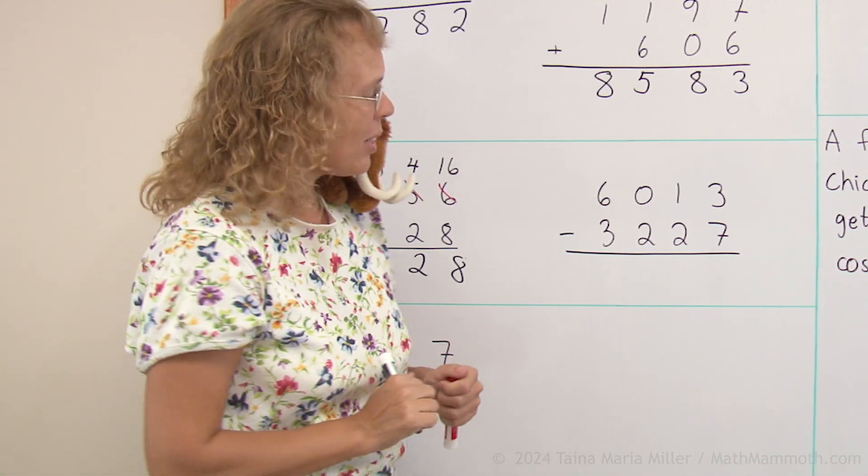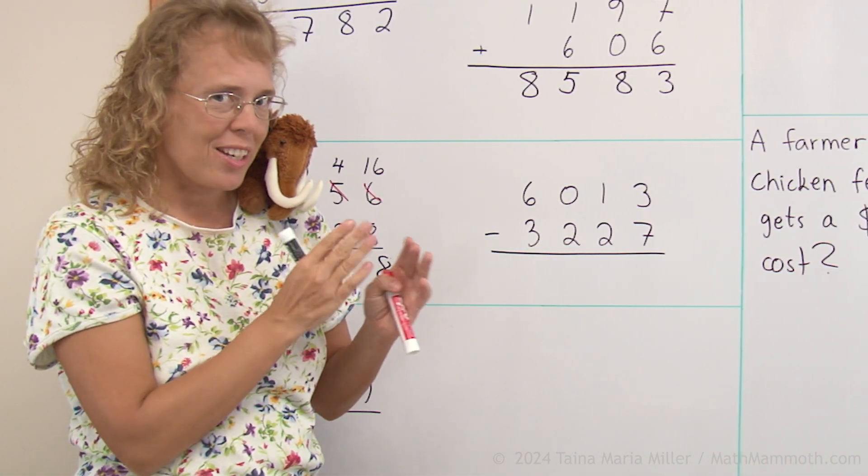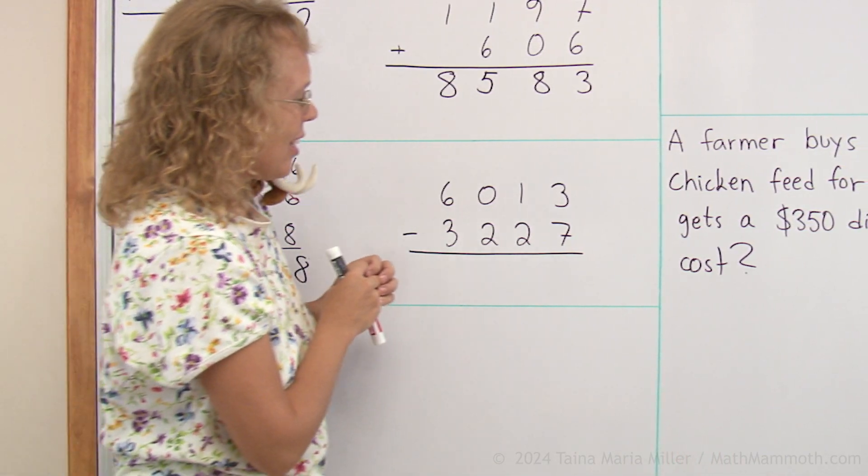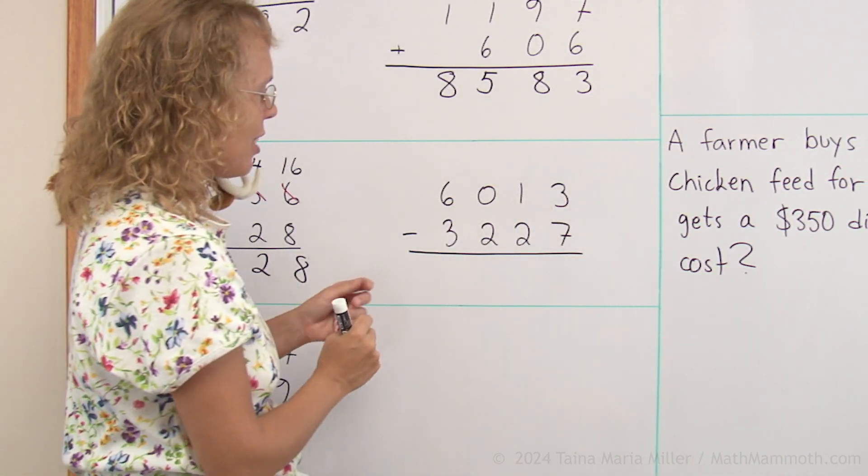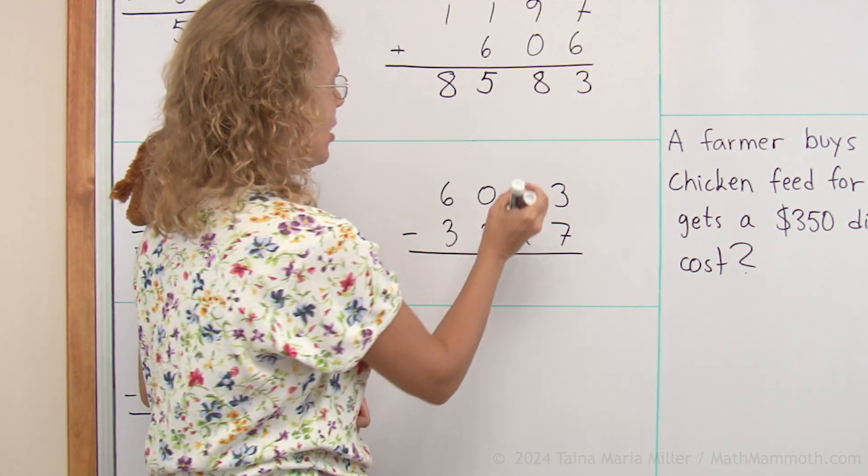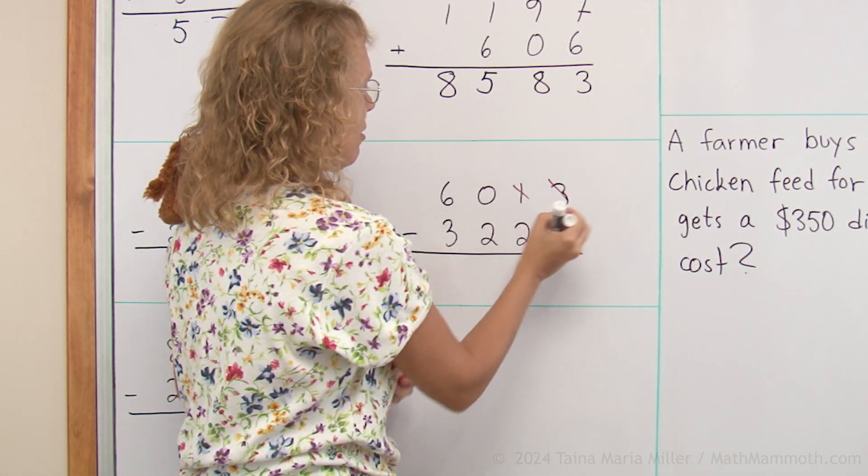All right, let's try another one. Or you try it on your own before I explain it. Starting the ones, three minus seven, can't do it, so we will regroup.